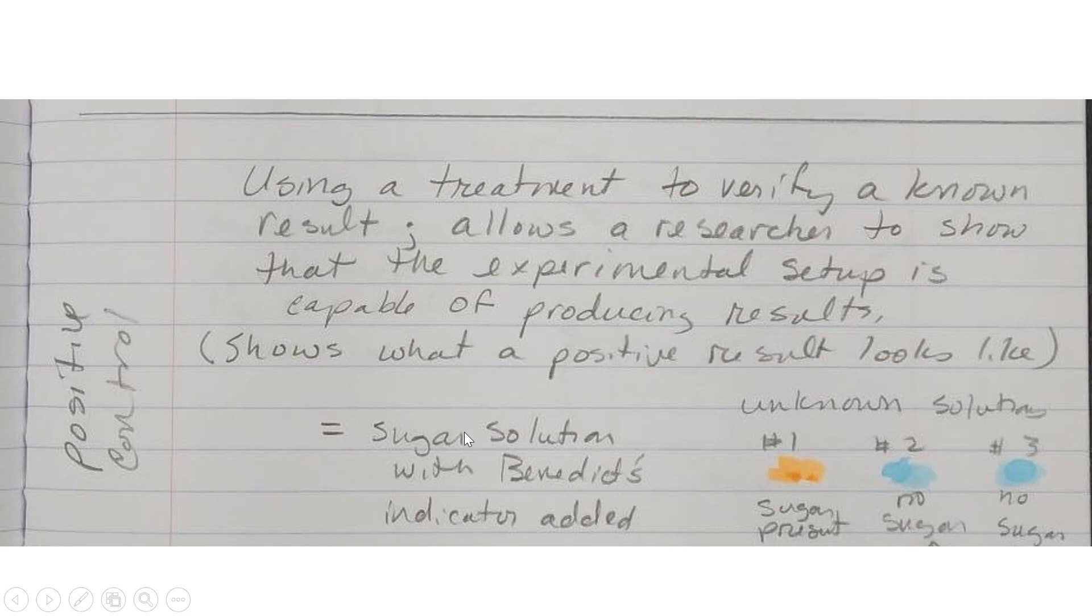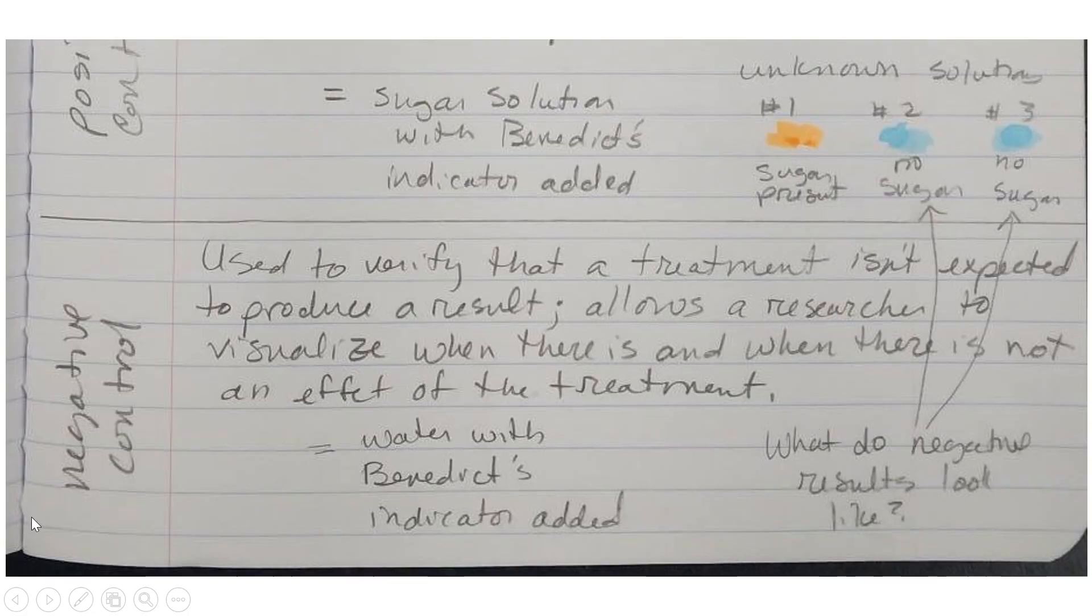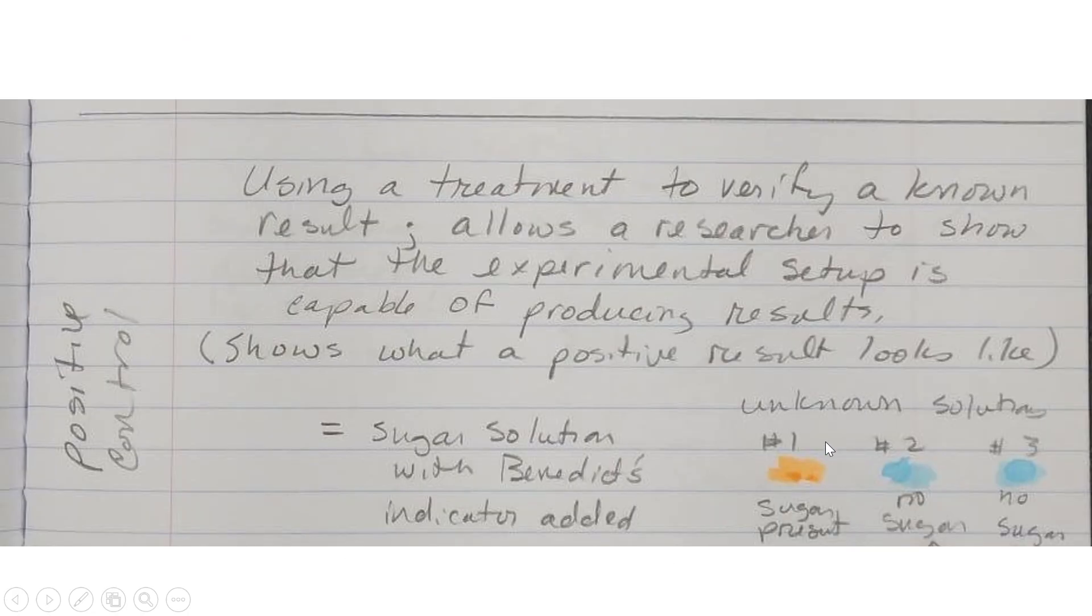So if I take a solution that I know has sugar in it and I add Benedict's to it, that tells me what is it going to look like when it's working, when I have a positive result. So here's my solutions. I have three unknown solutions. Sugar is present, no sugar, no sugar.